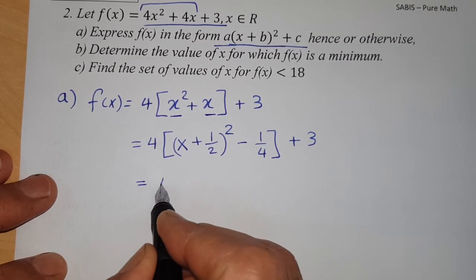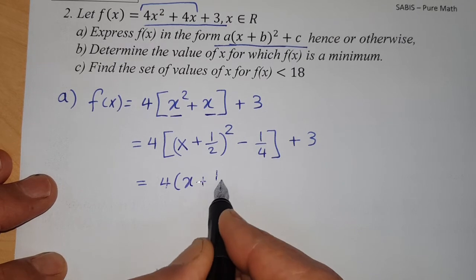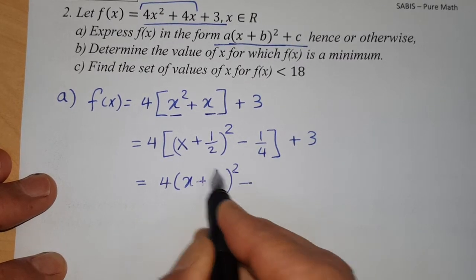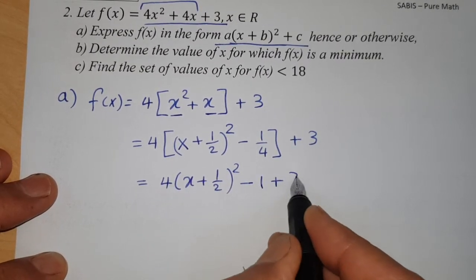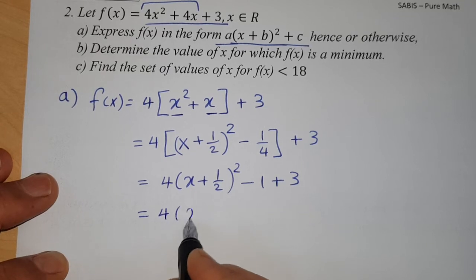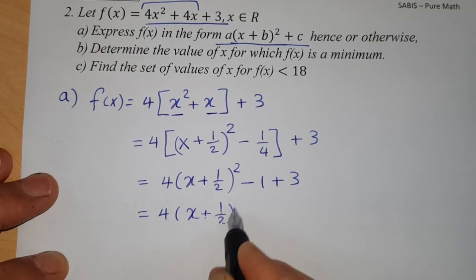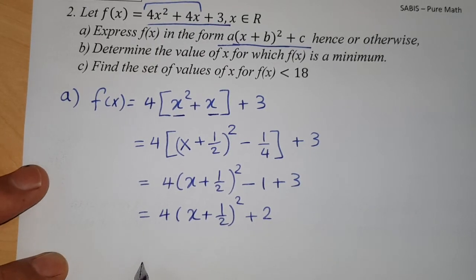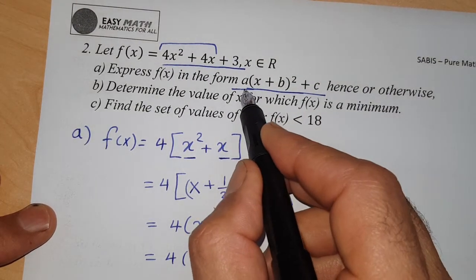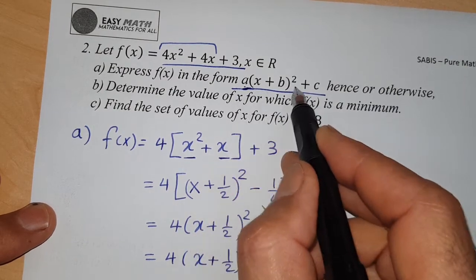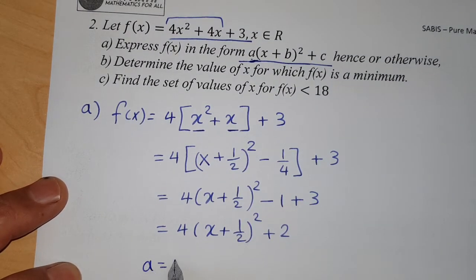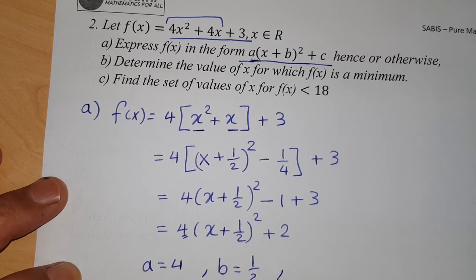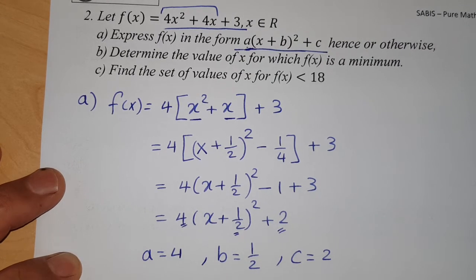Multiplying back: 4[(x + 1/2)² − 1/4] + 3 = 4(x + 1/2)² − 1 + 3 = 4(x + 1/2)² + 2. This is the canonical form. So a = 4, b = 1/2, and c = 2.